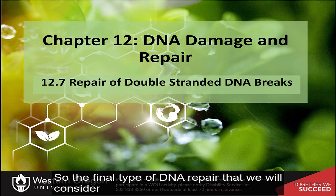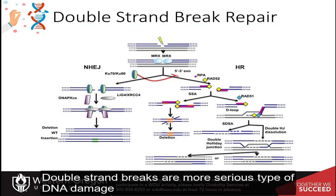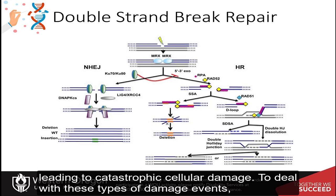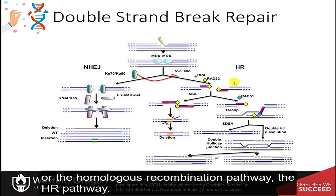The final type of DNA repair we will consider deals with larger-scale damage, such as DNA double-strand breaks. Double-strand breaks are a more serious type of DNA damage that can cause the loss of entire chromosomal segments, leading to catastrophic cellular damage. To deal with these damage events, the cell utilizes two major pathways: the non-homologous end-joining pathway, or NHEJ, or the homologous recombination pathway, or HR.